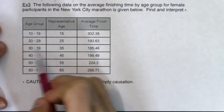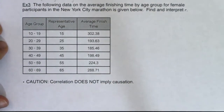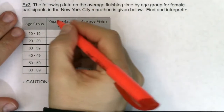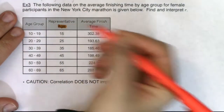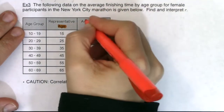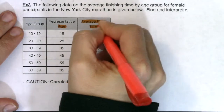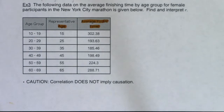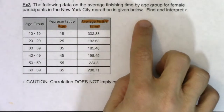We choose 25 to represent the next age group, and so on. So our two numerical variables are representative age and average finish time. With that, I'm going to flip over to the calculator and find r, then come back and interpret it together.